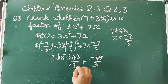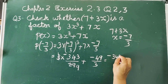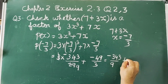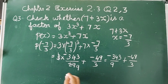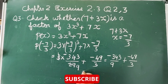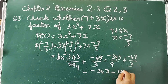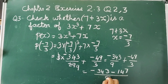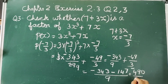Cancelling 3 and 27, we get 9. That is equal to minus 343 by 9 plus minus 49 by 3. Then by LCM method, we get minus 343 minus 147 upon 9, that is equal to minus 490 upon 9.